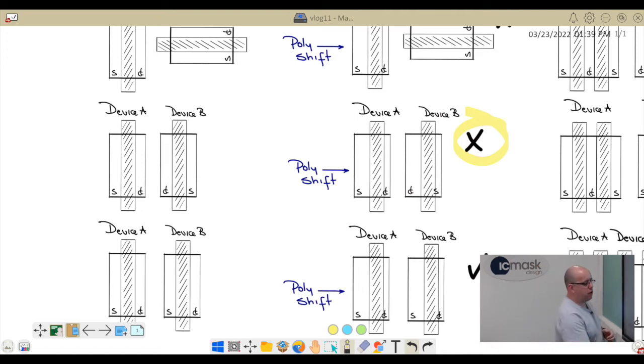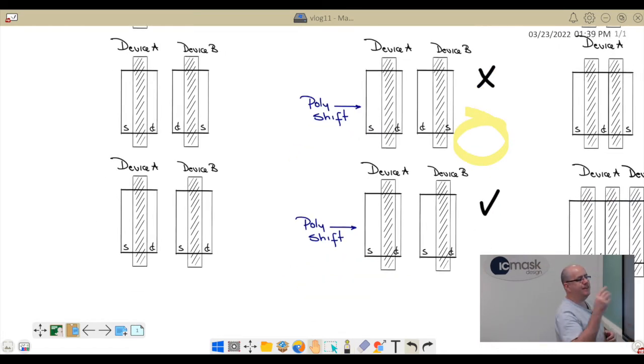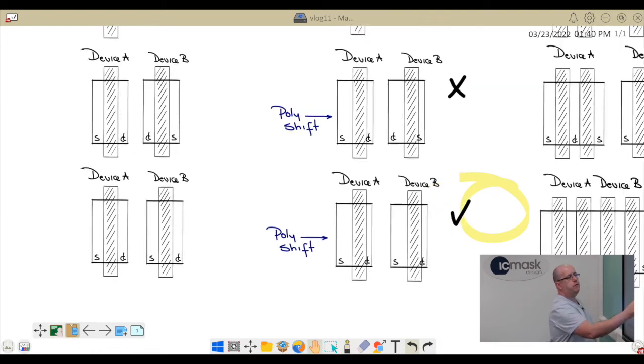If however we do orientation to be exactly the same, so we have both of them north and south with sources on the left and drains on the right, when we get a mask shift the source gets bigger on device A and drain gets smaller, source gets bigger on device B and drain gets smaller. The devices are matched, and this is one of the things we would be very familiar with.